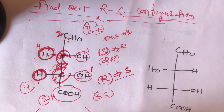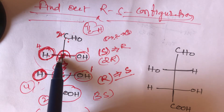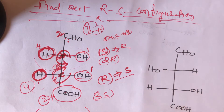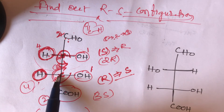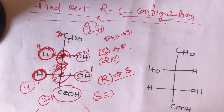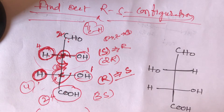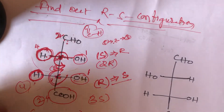So the total configuration of the first structure is 2R, 3S. Here, '2' refers to the second carbon whose configuration is R, and '3' refers to the third carbon whose configuration is S. Therefore, the first given structure is the 2R, 3S configuration.